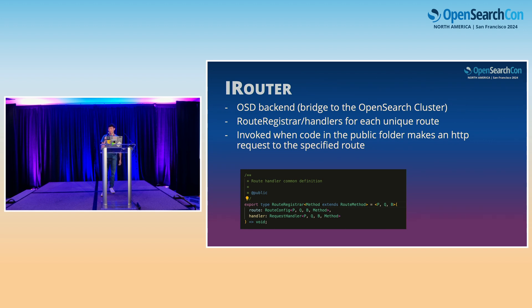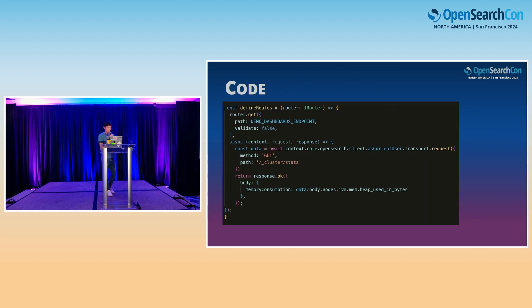The HTTP service setup creates an IRouter via the createRouter function, which acts as the bridge to your OpenSearch Dashboards backend. Each route — such as get, post, or delete — on the IRouter is a route registrar where you can register a custom endpoint as well as a handler function that gets invoked when that endpoint is called. Here we can see that when given an instance of an IRouter, we register a custom demo dashboards endpoint on the get route registrar. When the public side calls that endpoint, we invoke the handler function — in this case, making a backend request to get the current JVM heap usage from the cluster stats API.